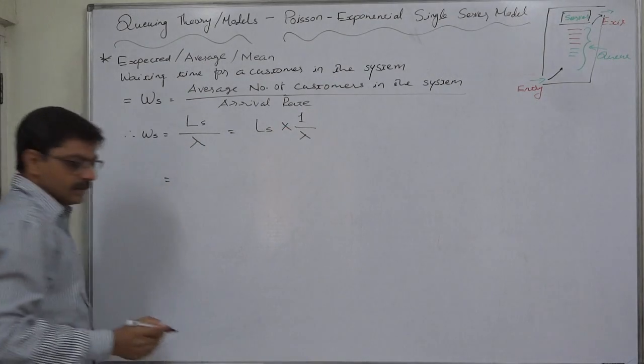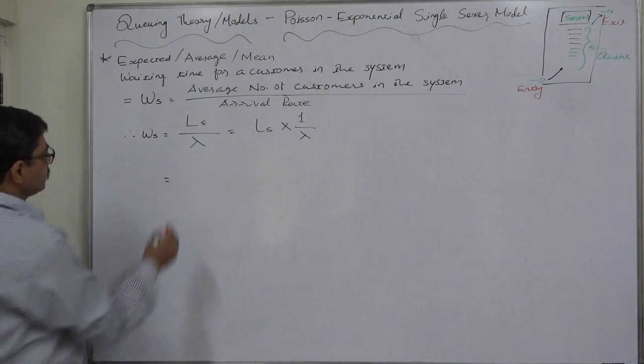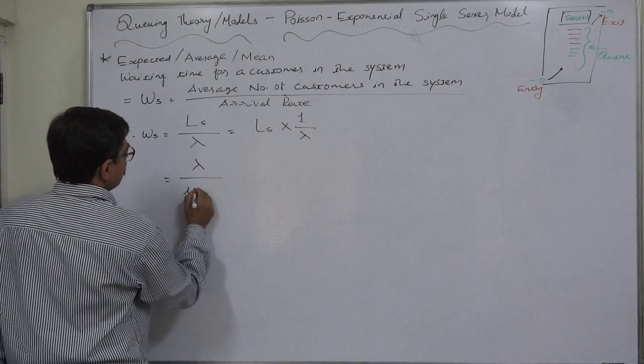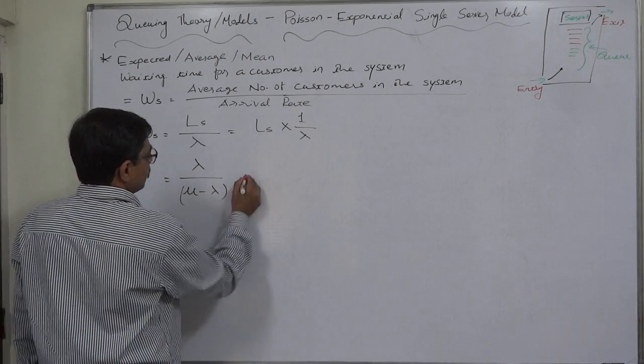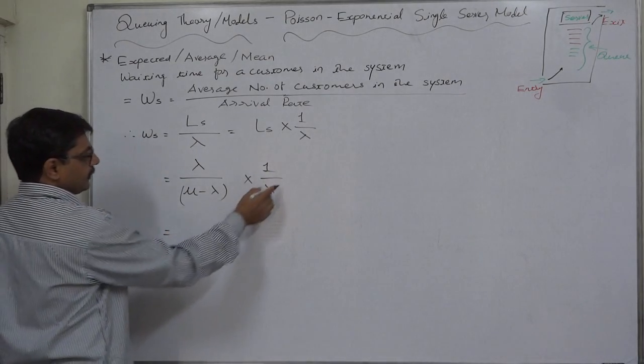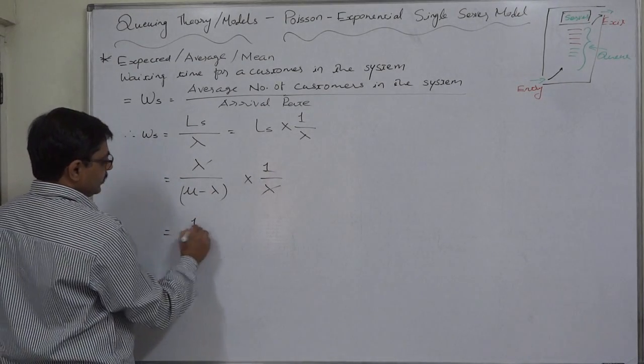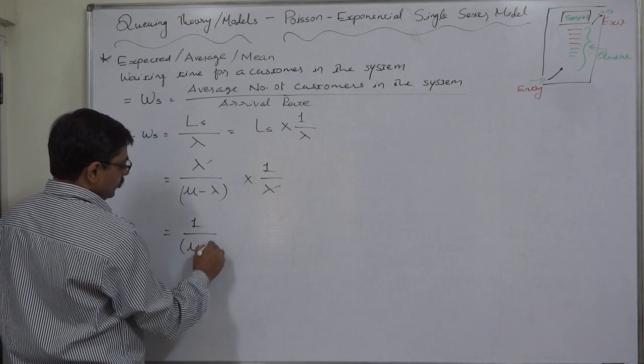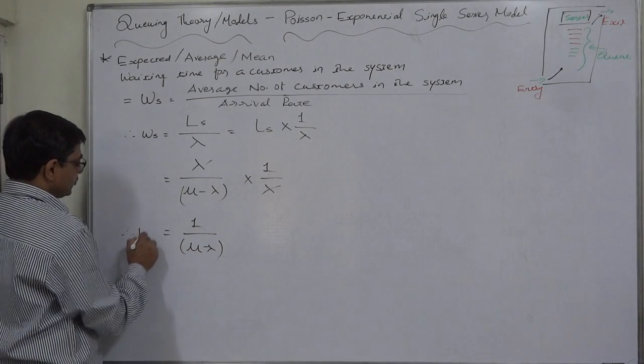This will be easier. That formula we derived was lambda upon mu minus lambda into 1 upon lambda. Now we can cancel the two lambdas. So ultimately the formula comes to 1 upon mu minus lambda. Very simple formula.